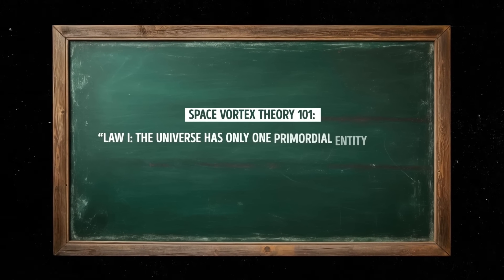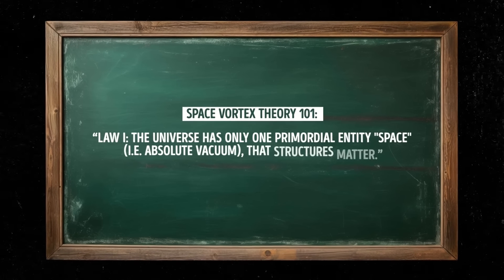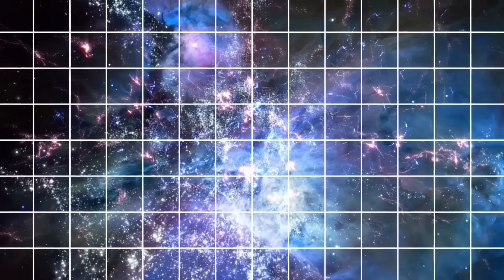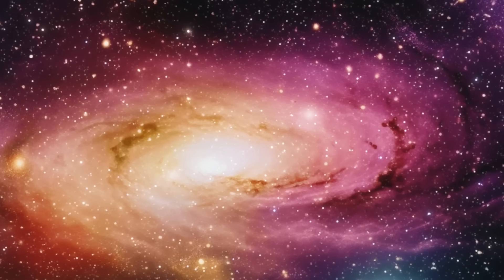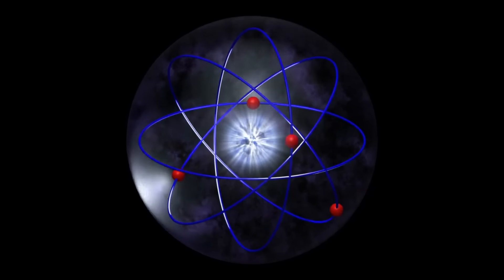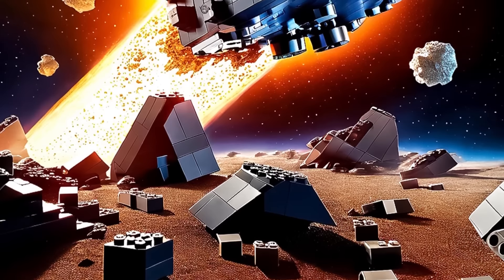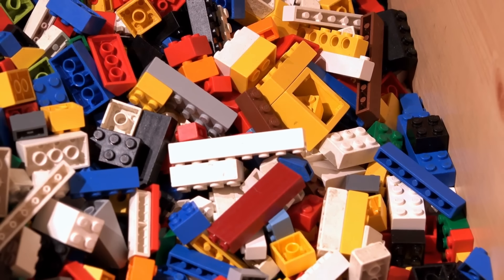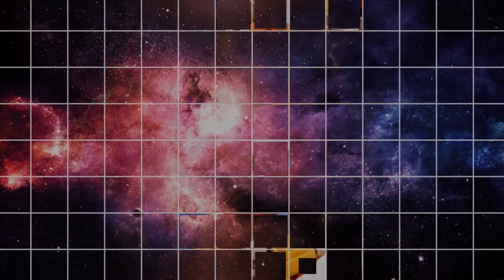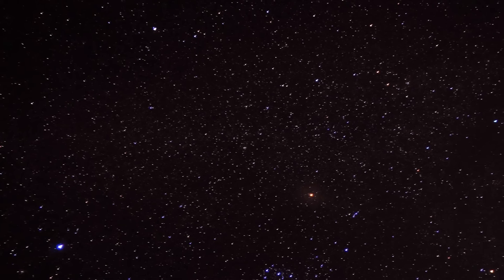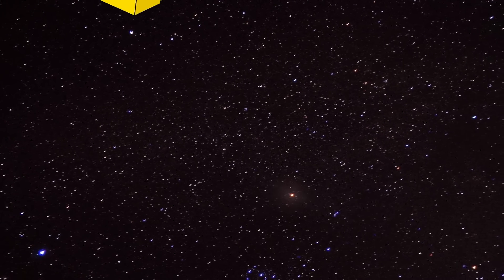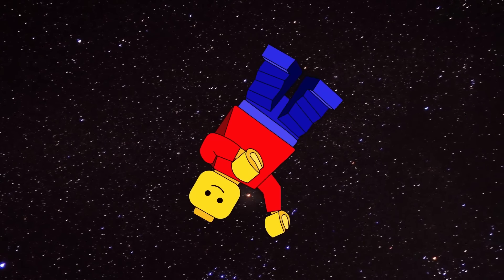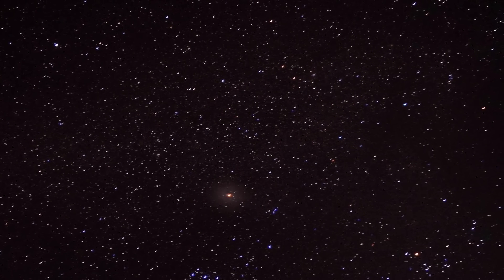Law 1: The universe has only one primordial entity — space, i.e. absolute vacuum — that structures matter. This law states that space is the fundamental building block of the universe, responsible for structuring matter. It suggests that all matter in the universe is made up of the same fundamental particles like electrons and positrons. Imagine that the universe is like a big Lego set — just like how all the Lego bricks are made of the same basic building blocks, the universe is too. Space gives it shape and structure, just like how a plastic container holds all the Lego bricks together.